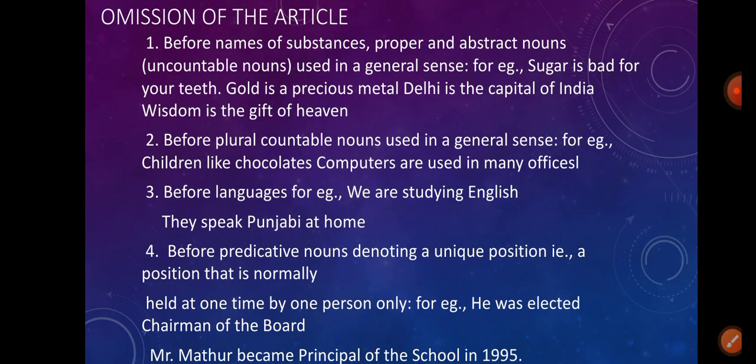Omission of the article: before names of substances, proper and abstract nouns, and uncountable nouns used in a general sense — for example: sugar is bad for your teeth; gold is a precious metal; Delhi is the capital of India; wisdom is the gift of heaven. Before plural countable nouns used in a general sense — for example: children like chocolates; computers are used in many offices. Before languages — for example: we are studying English; they speak Punjabi at home.